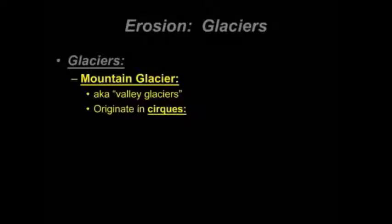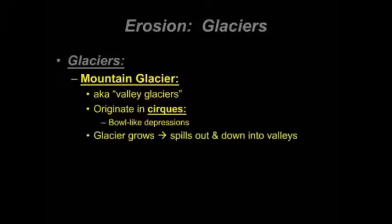Key to understanding mountain glaciers: they begin as what we call a cirque glacier. In a very upland area, a bowl-like depression forms, and snow compacts and compacts in that depression. Eventually that snow overflows that cirque — overflows that bowl or depression — and starts to flow outward down a slope. We can see that in various animations to follow.